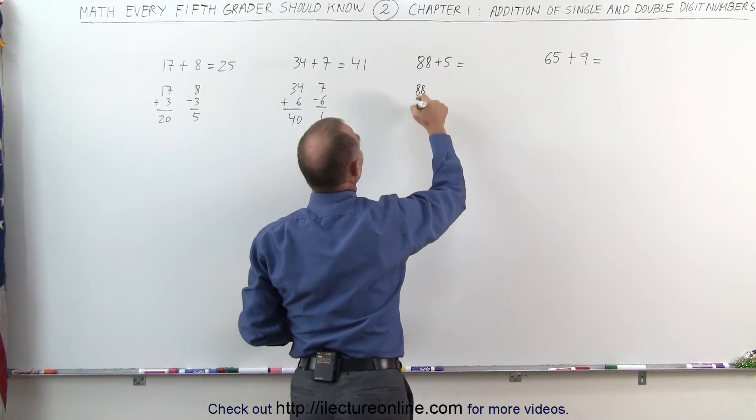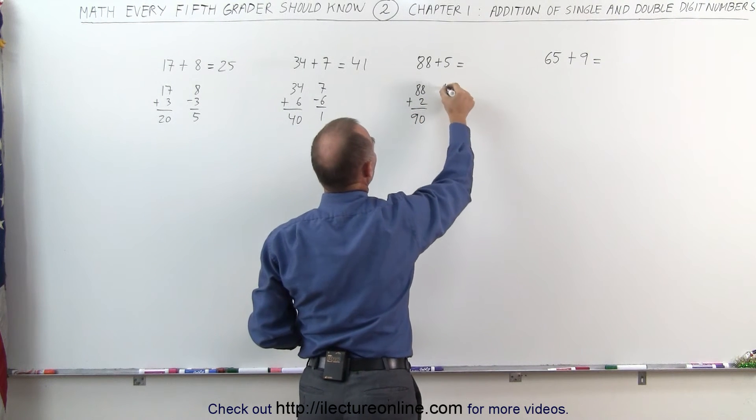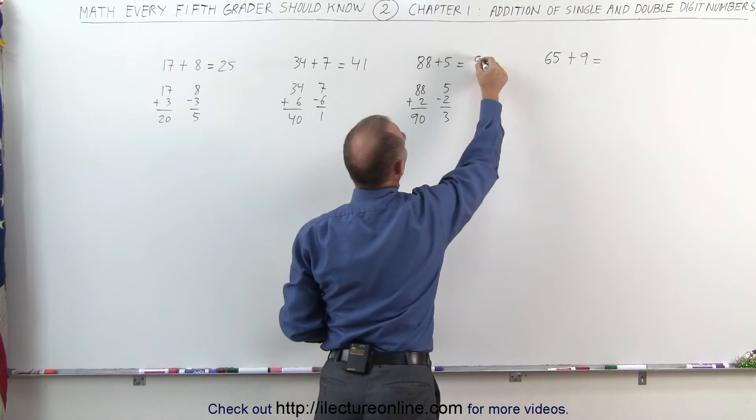So what I did was I said 88 plus 2 more will give me 90. I subtracted 2 from 5. I get 3. 90 plus 3 is 93.